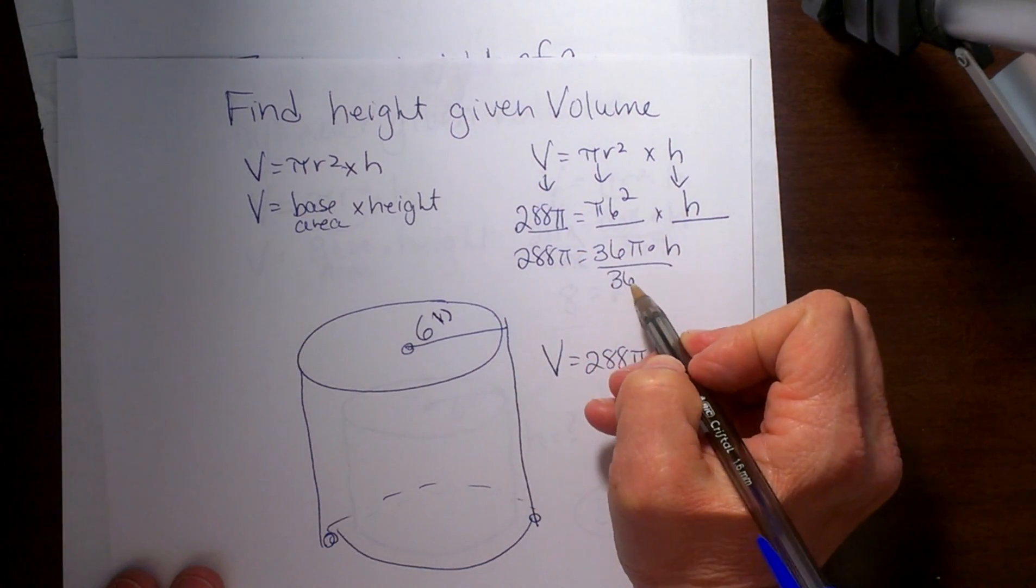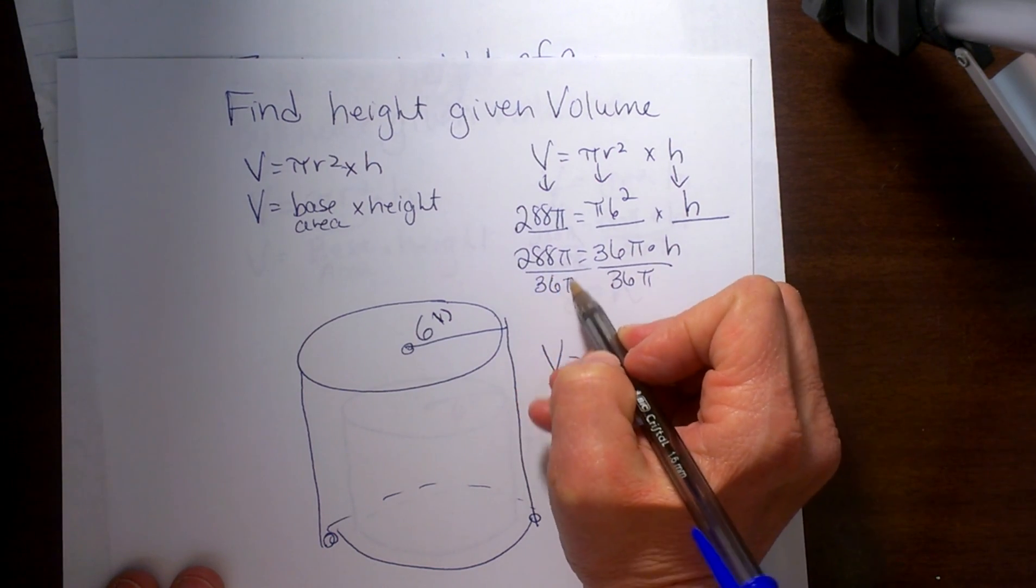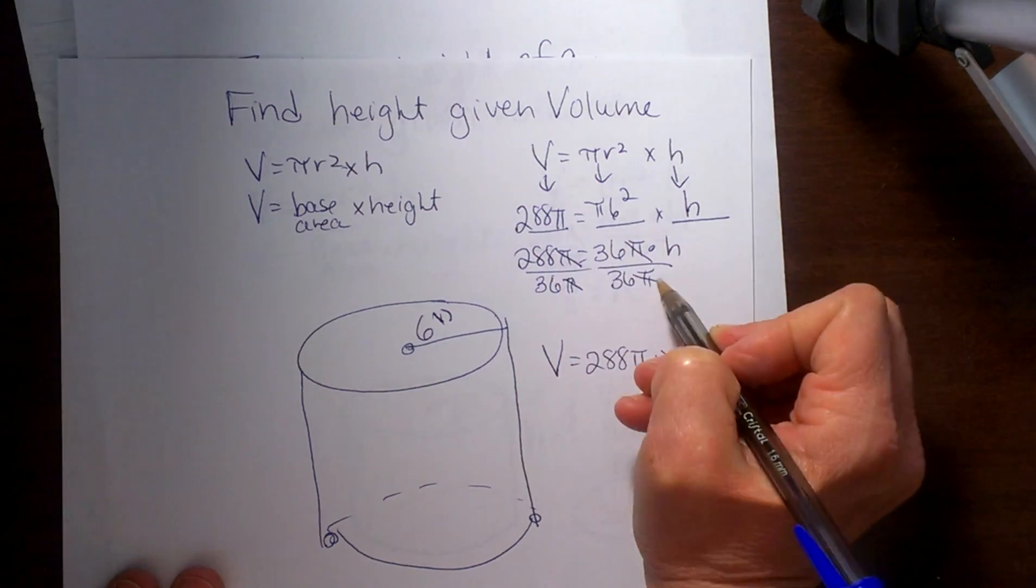So I am just going to divide both sides by 36 and pi. And when you divide by pi my pi is all just cancelled out.